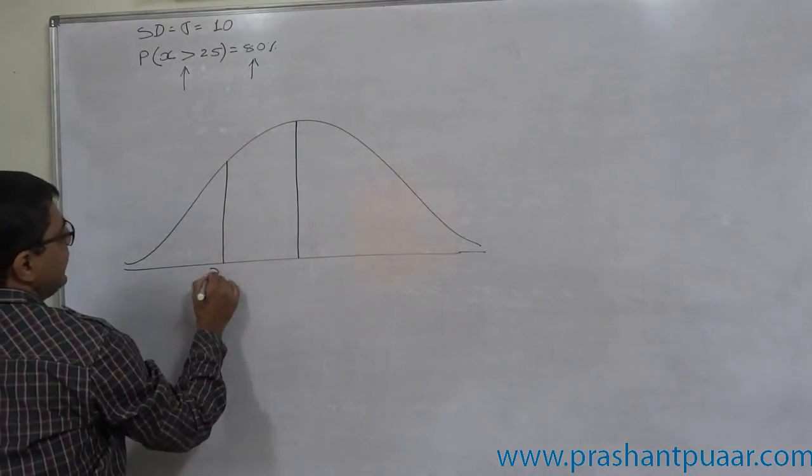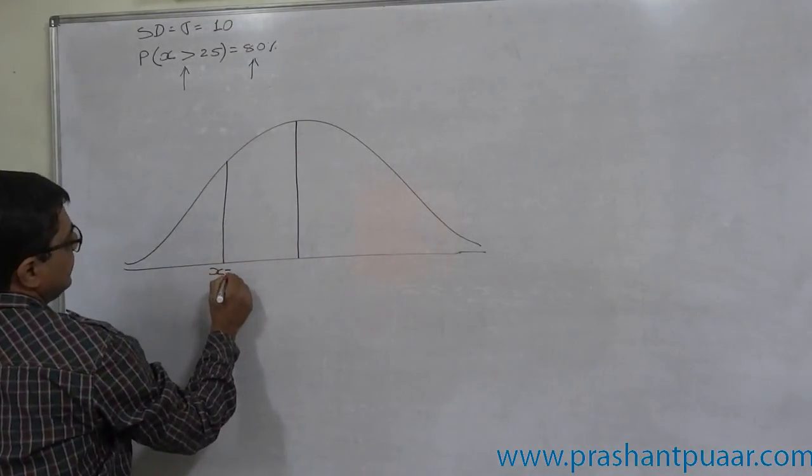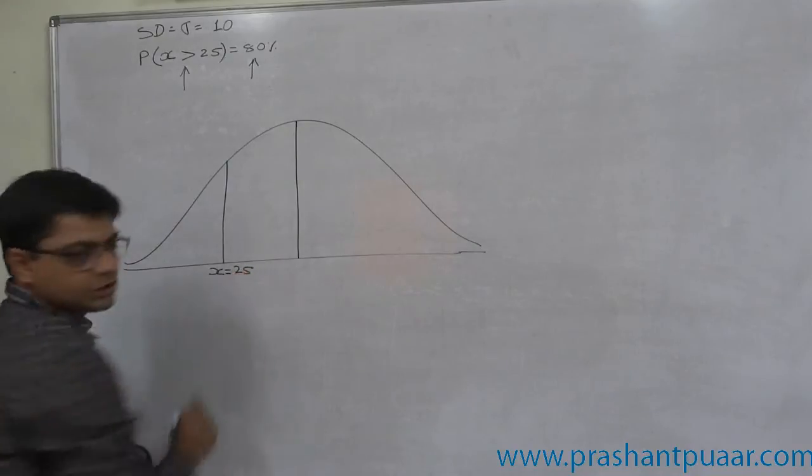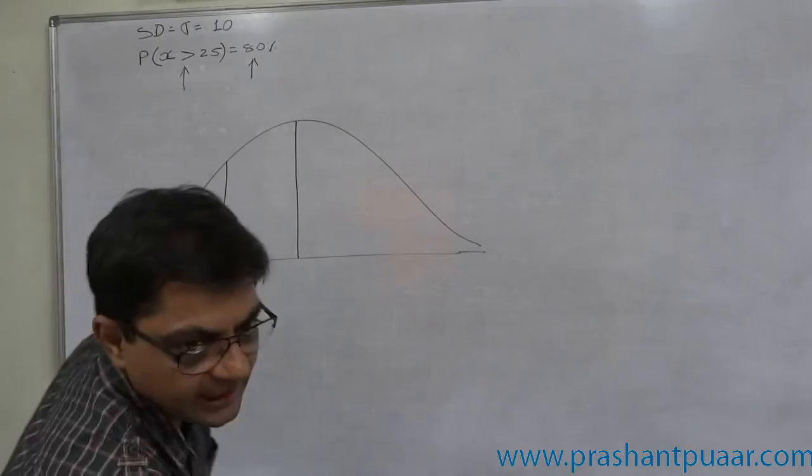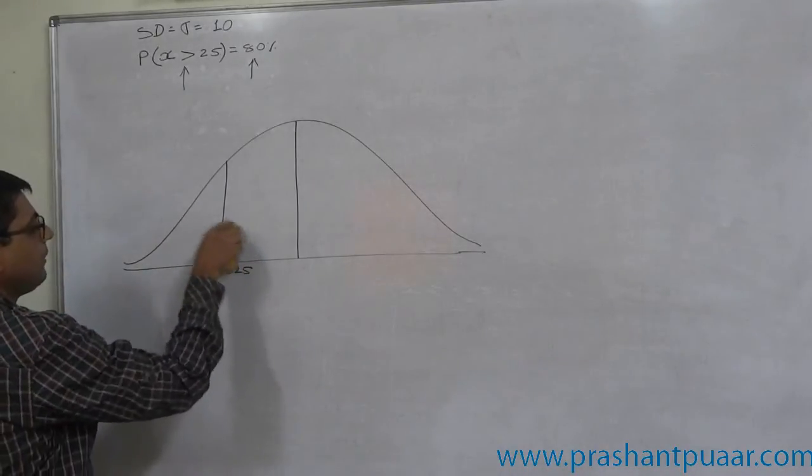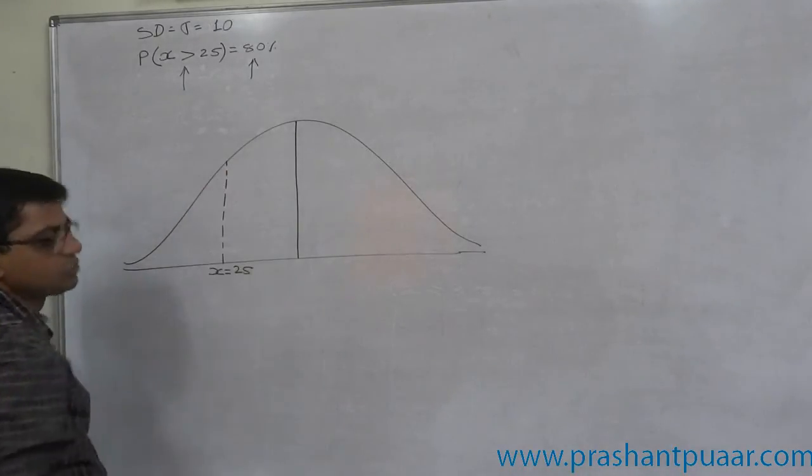So in this case, x equals to 25 must be here. Because 80% values are greater than 25. Now, we know that greater than means on right-hand side.